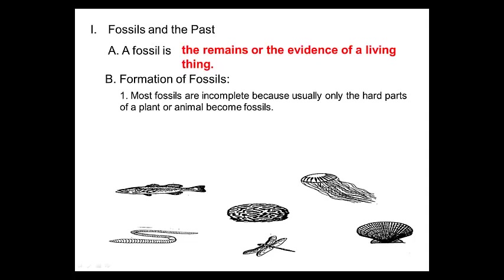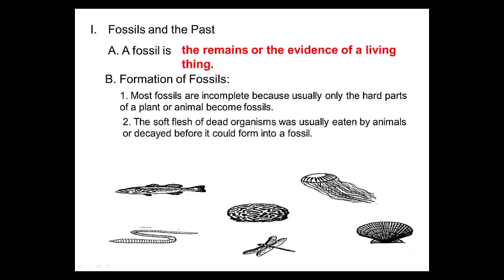Formation of fossils. Most fossils are incomplete, which means you don't see the entire thing, because usually only the hard parts of a plant or an animal become fossils. Any of the soft tissue would not fossilize. The soft flesh of dead organisms was usually eaten by animals or decayed before it could form into a fossil. That's why they're incomplete.